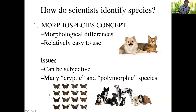Cryptic species are species that look very similar. For example, these moths represent 16 different species, and they're very, very similar looking. You need to really be an expert on moth morphology to be able to call these different species.